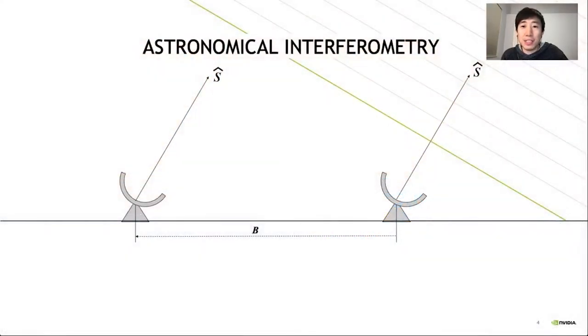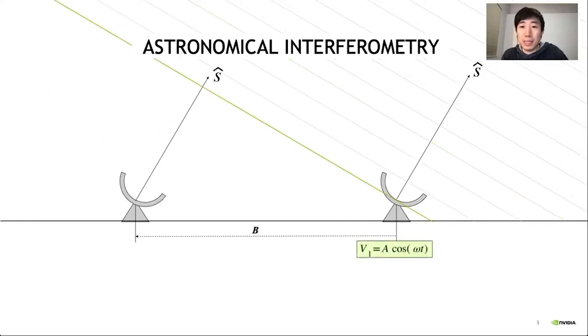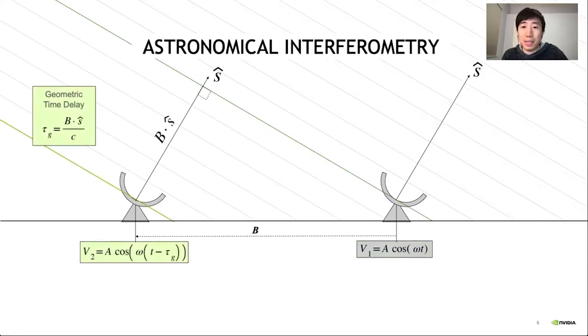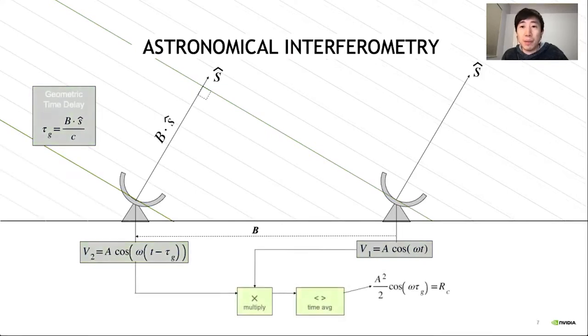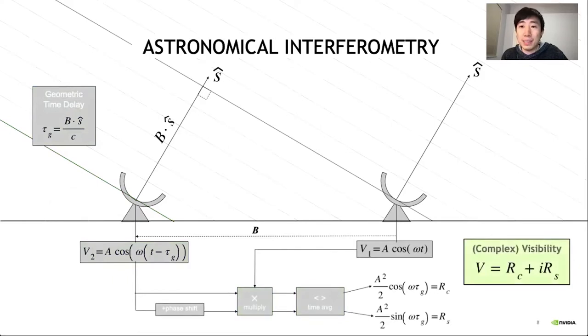So how does interferometry work? Let's say you have a pair of telescopes separated in distance by baseline b. The incoming wavefront will reach the first antenna slightly earlier than the second one due to the speed of light. We can then combine the signals from the two antennas to get a quantity called the visibility.